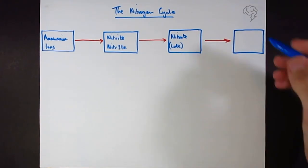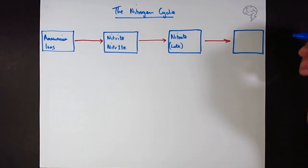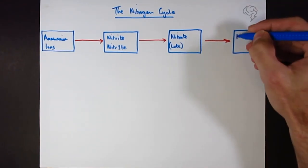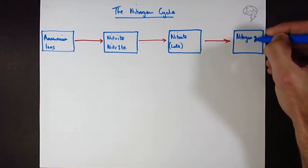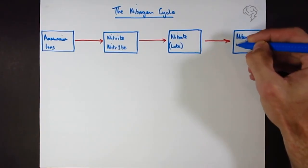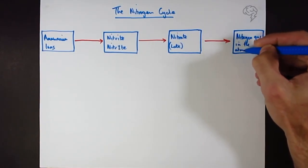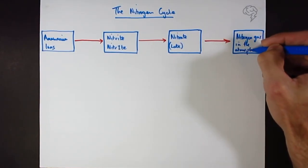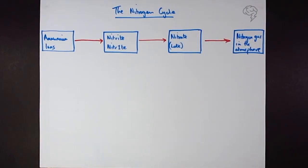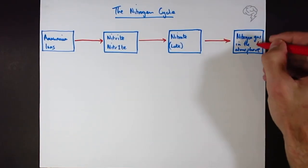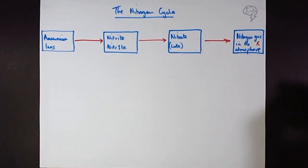Then there's the evil form that we do not want: nitrogen gas in the atmosphere. This is very unreactive and inert — it's almost impossible for biological things to use. I'll put a nasty cross on it because that's not the form of nitrogen that living things want.